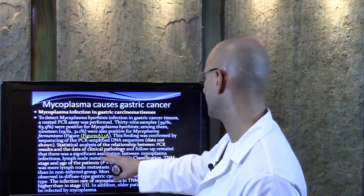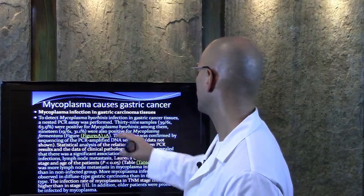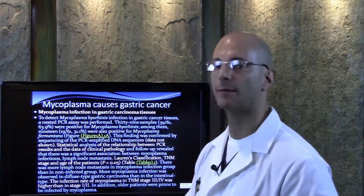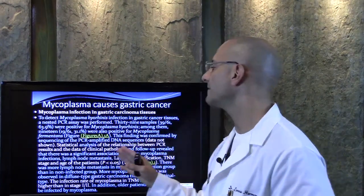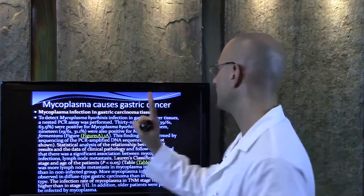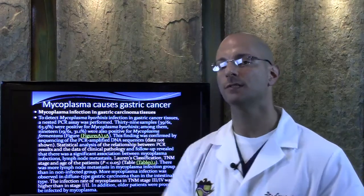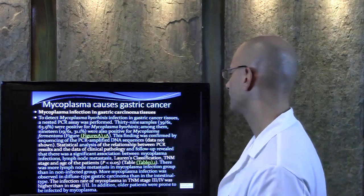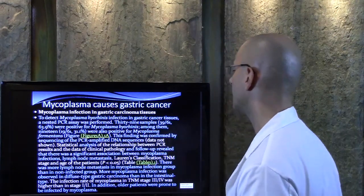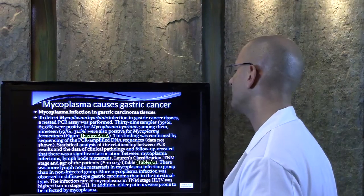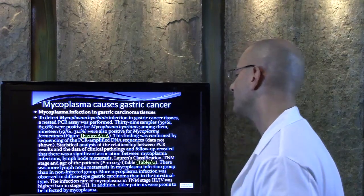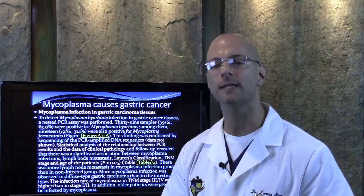Let's get down to the bottom line. 39 samples were positive for the mycoplasma infection. Among them, 19 were also positive for a second type of mycoplasma infection. So 39 of the 61 were positive for one kind of this mycoplasma bacterial infection, and the other 19 had two of these kinds of bacterial infections. This finding was confirmed by DNA sequence analysis and revealed a significant association between mycoplasma infection and lymph node metastasis. There was more lymph node metastasis in the mycoplasma infection group than in the non-infected group, meaning the bacterial infection is making the cancer worse.